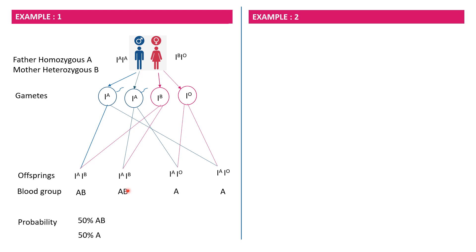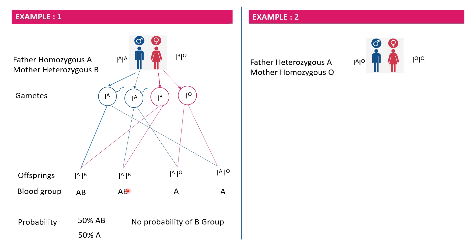Offspring with IAIB have blood group AB, whereas offspring with IAIO have blood group A. The probability of having AB blood group is 50% and the probability of having A blood group is 50%. What is interesting is that there is no probability of the offspring having blood group B, even though the mother's blood group is B.